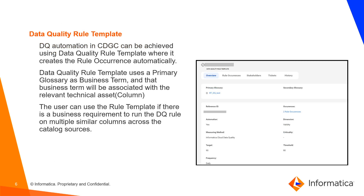In CDGC, DQ automation can be achieved using data quality rule template, where it creates DQ rule occurrence automatically. Data quality rule template uses a primary data glossary as a business term, and the business term will be associated with relevant technical asset columns. The user can use rule template if the business requirement is to check data quality on multiple similar columns across the catalog sources.